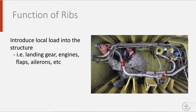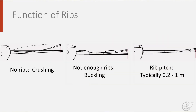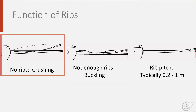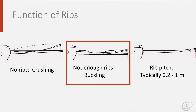Ribs also have a sealing function in the case of an integral fuel tank. They prevent surge and splashing because you can separate fuel tanks into individual bays. Without ribs, the wing would have a much harder time functioning. The wing panels would simply crush, and if you do not put in enough ribs, the wing skin panels will buckle.